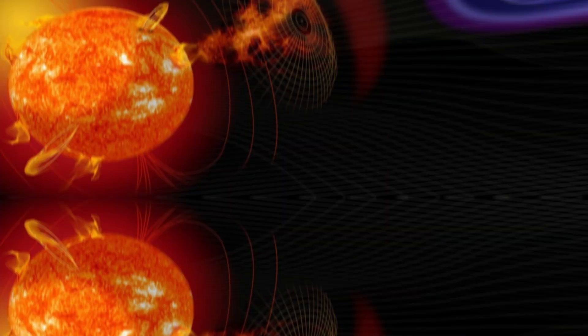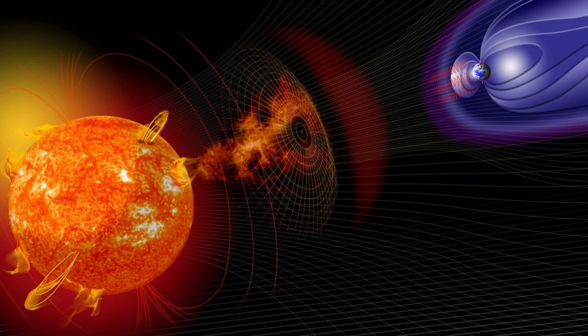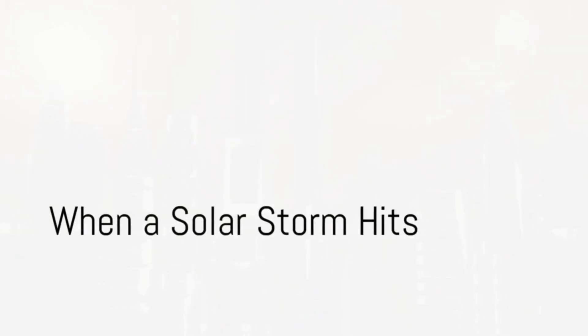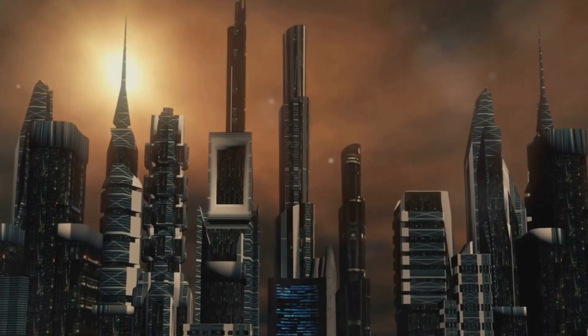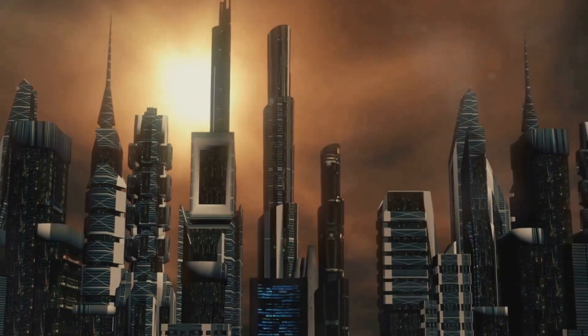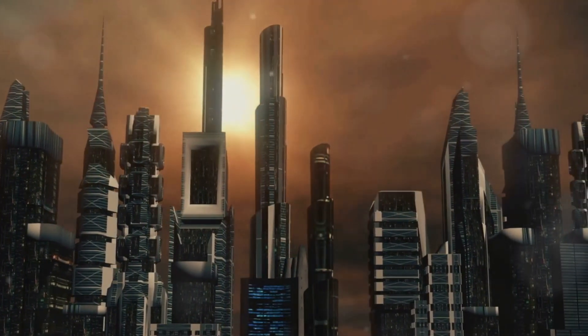Now that we know what causes a solar storm, let's delve into what happens when one hits Earth. Imagine waking up one day to a world without electricity or reliable communication - a seemingly sci-fi scenario, but one that could become reality if a solar storm were to hit Earth in 2024.